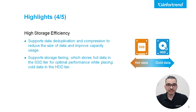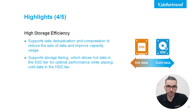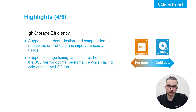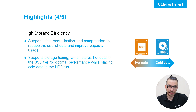To achieve exceptional storage efficiency, GS5000U incorporates several features. First, our solutions support data deduplication and compression — two powerful techniques for reducing data size and improving capacity usage. Data deduplication identifies and eliminates duplicate copies of data, while compression reduces the size of individual data blocks. By leveraging these technologies, our systems can significantly reduce storage requirements, allowing you to store more data in less space and lower your overall storage costs.